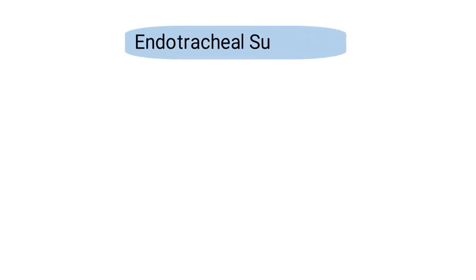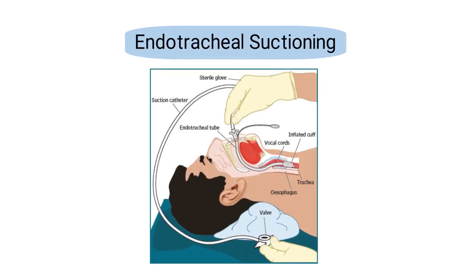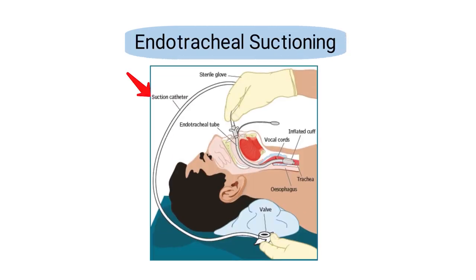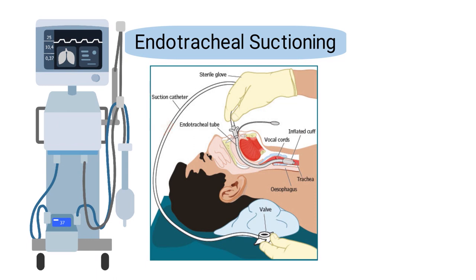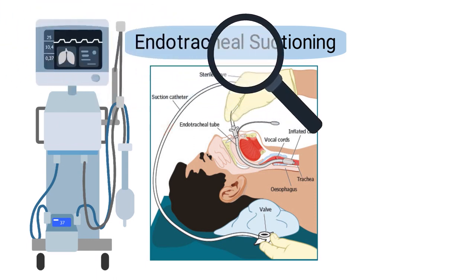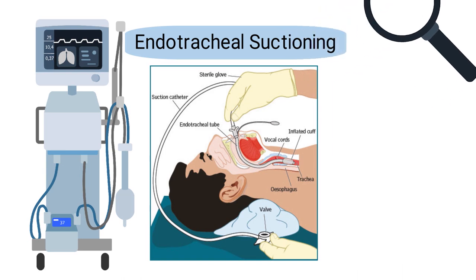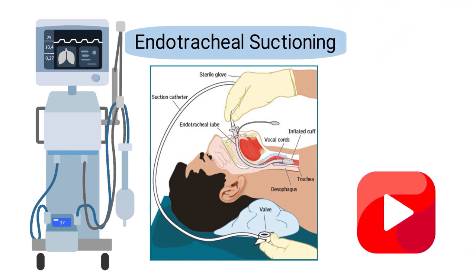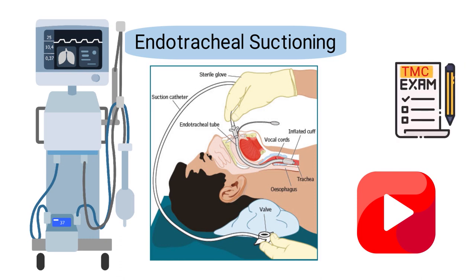Endotracheal suctioning is the process of inserting a suction catheter directly into the endotracheal tube of a patient who is receiving mechanical ventilation. There are a few specific details about this type of suctioning that you must be familiar with, which is why in this video we're going to break down a sample TMC practice question on this topic.